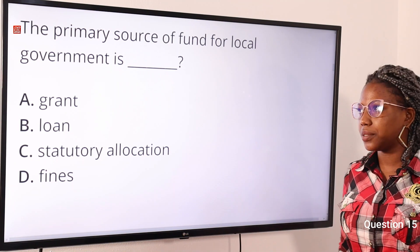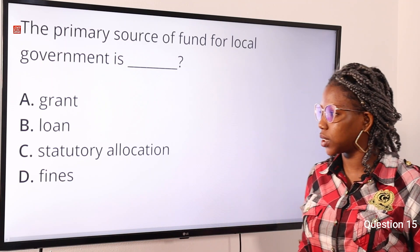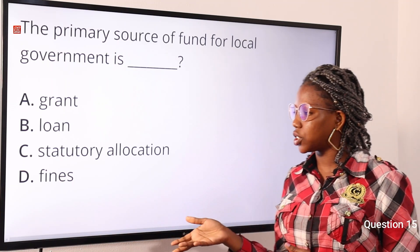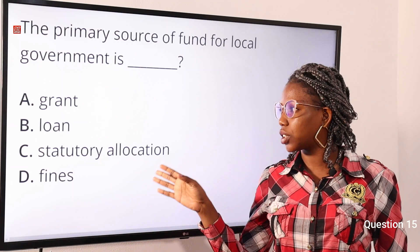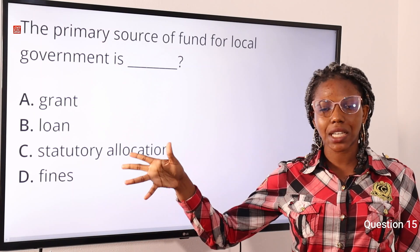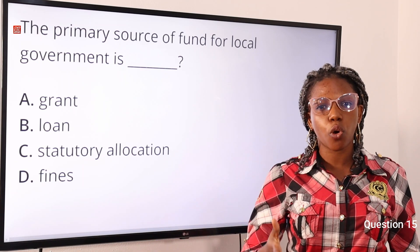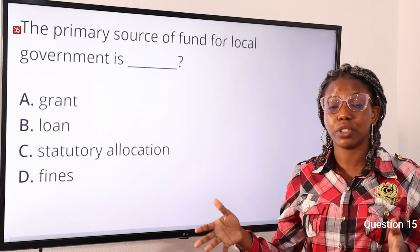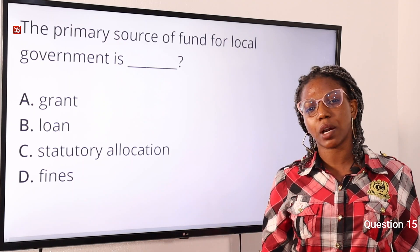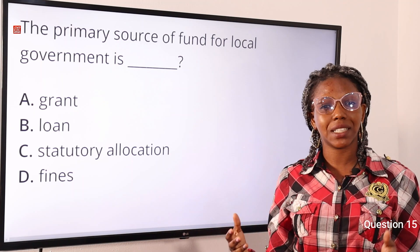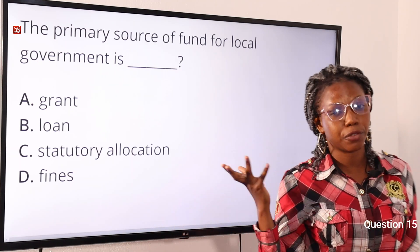Question fifteen: the primary source of funds for local government is — option A: grants, option B: loans, option C: statutory allocation, option D: fines. The answer is option C, statutory allocation. While all options can be sources of revenue, statutory allocation is the primary or major source. It refers to a required, permanent allocation received from the federal government.